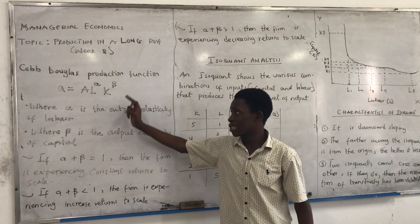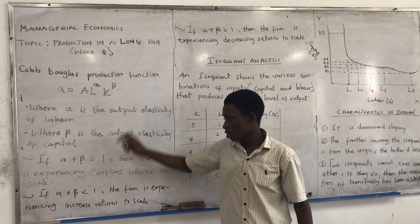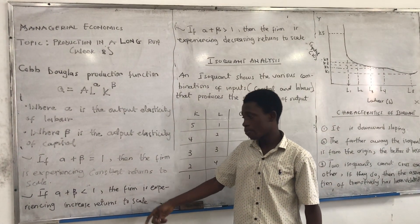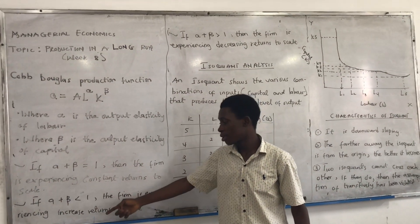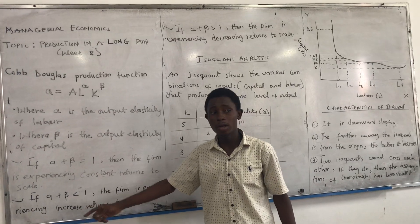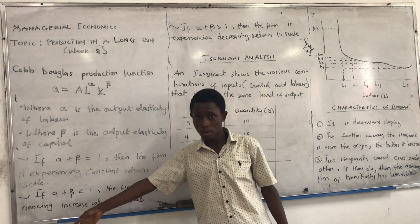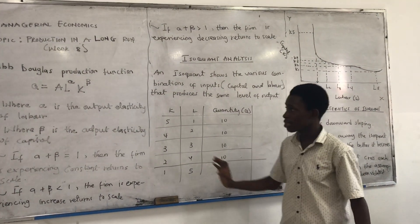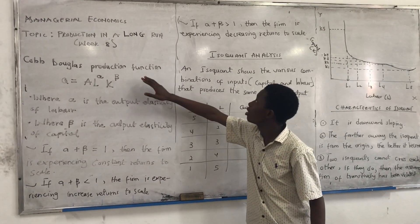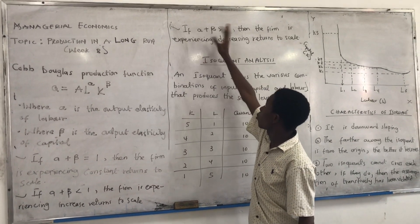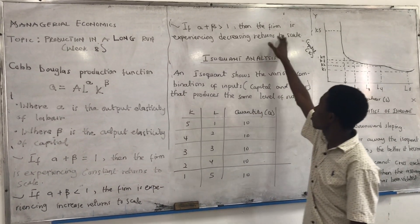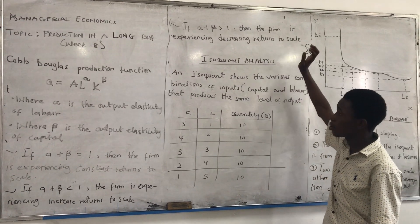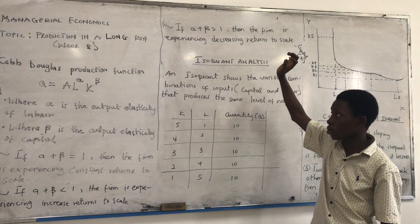Also, if alpha plus beta is greater than 1, then the firm is experiencing increasing returns to scale.